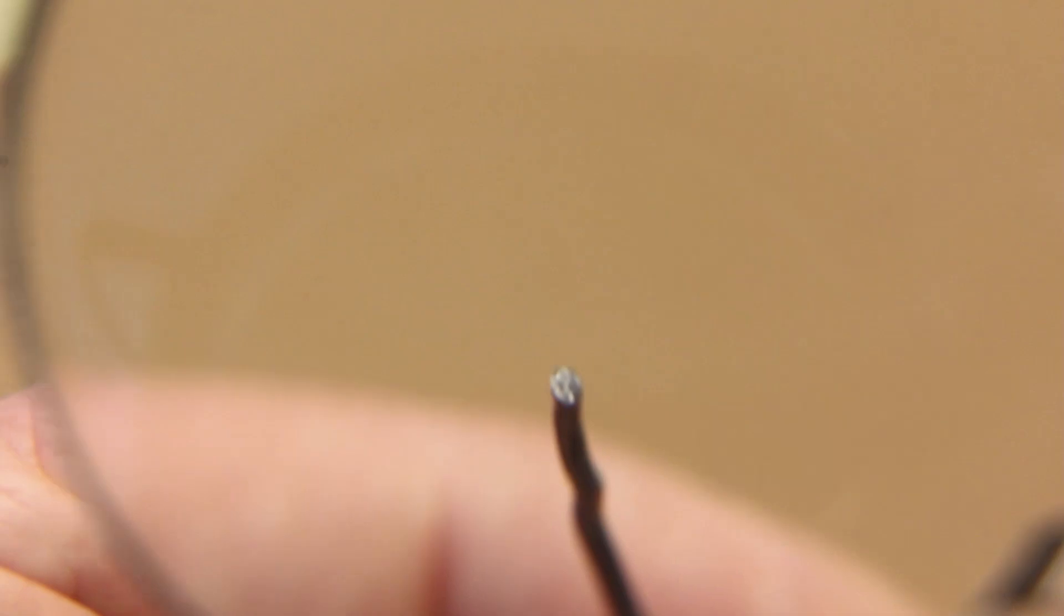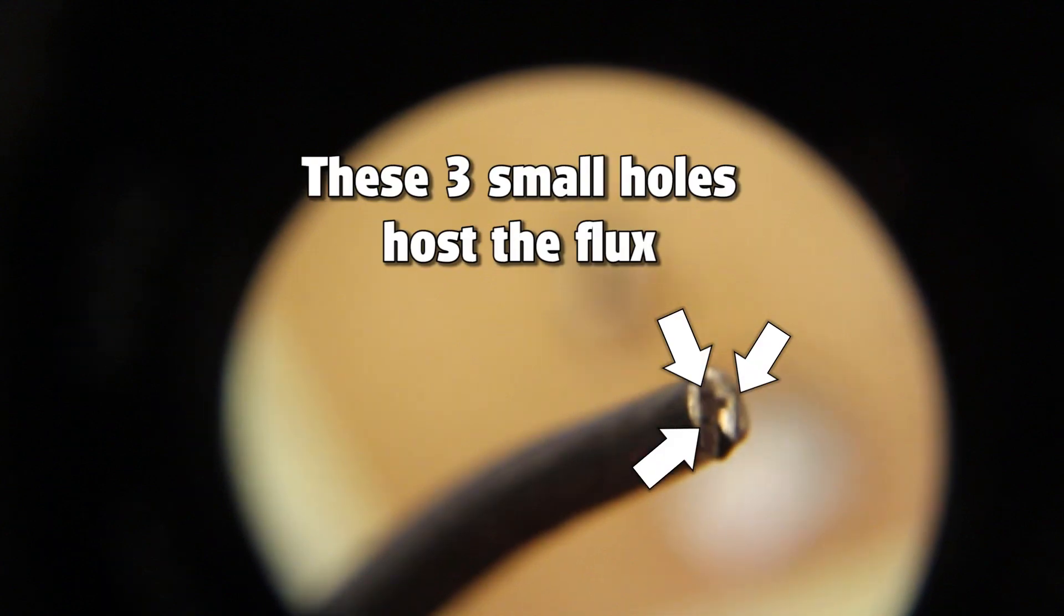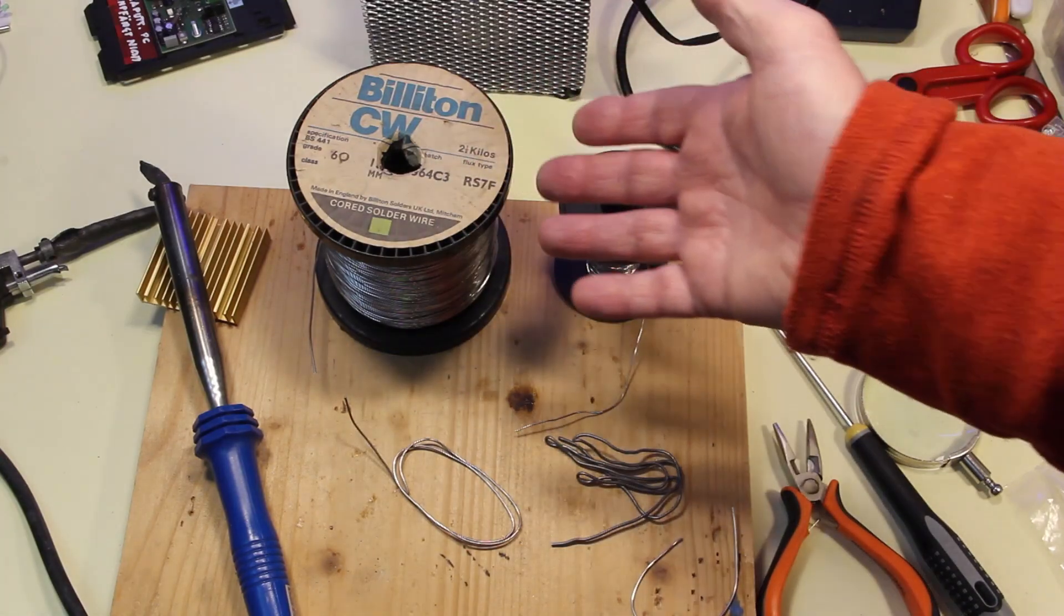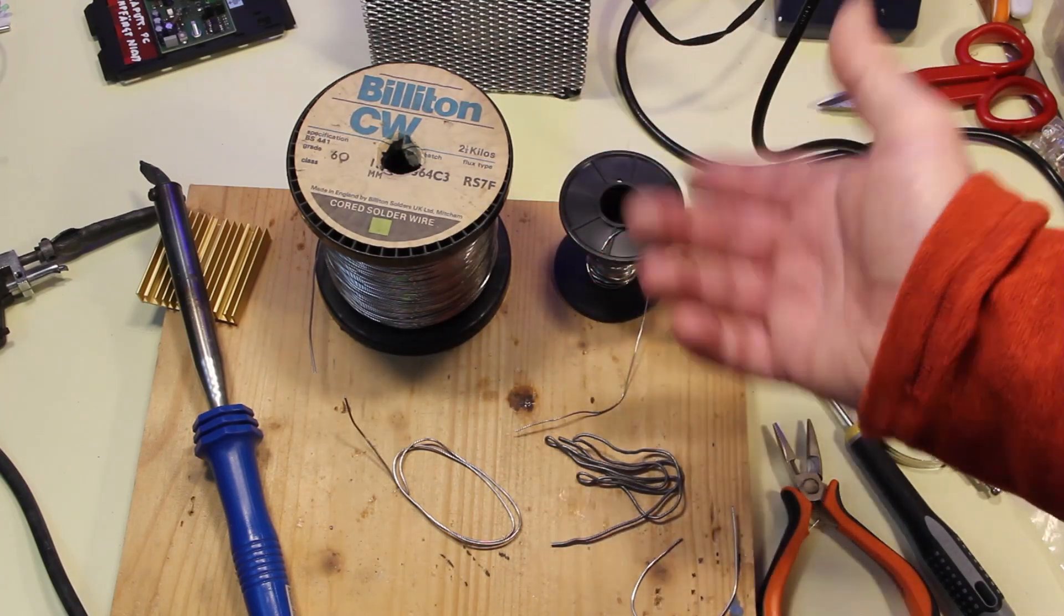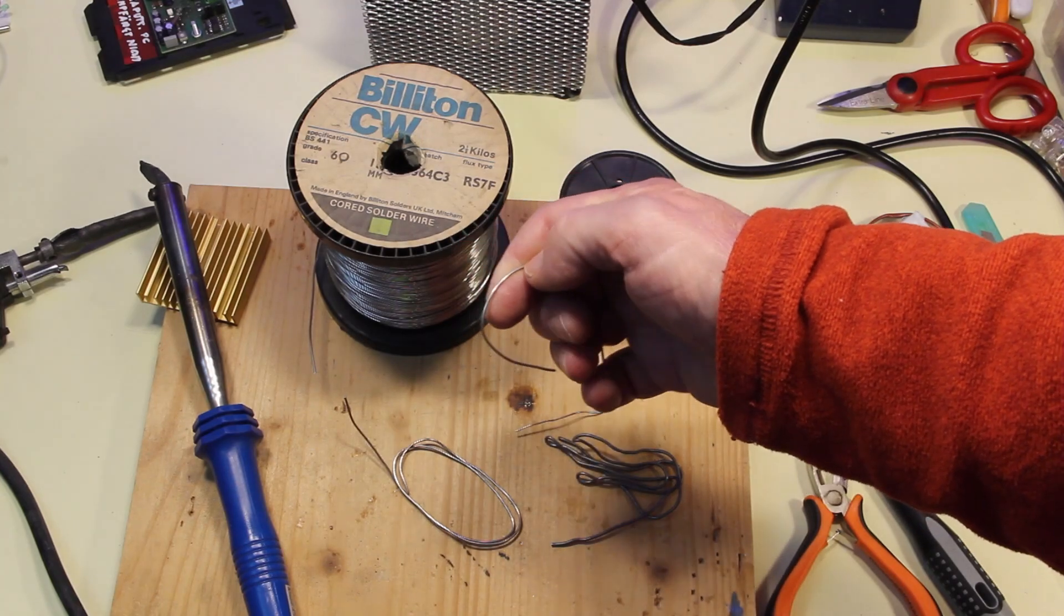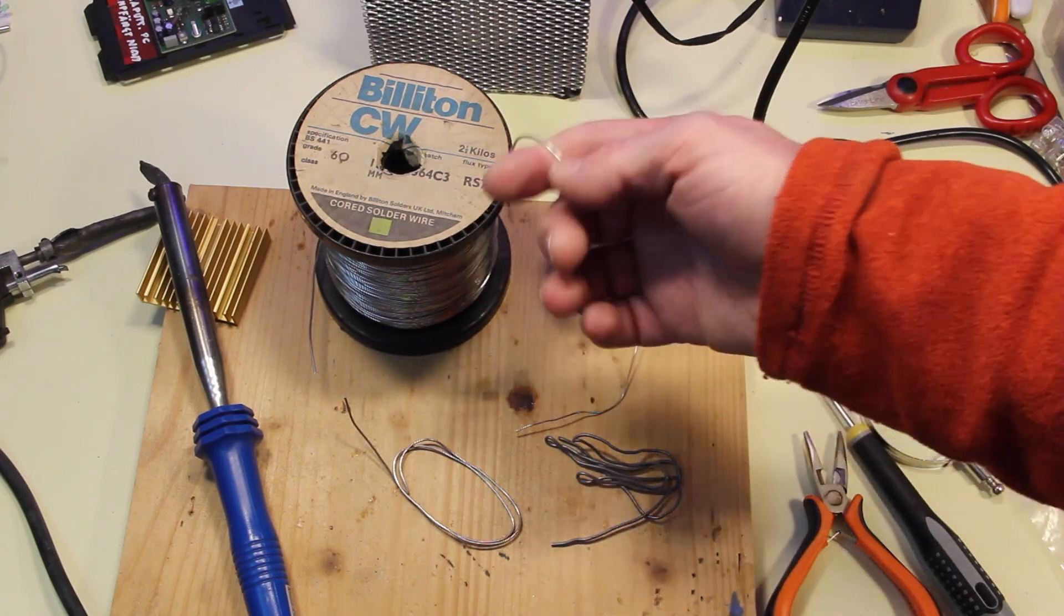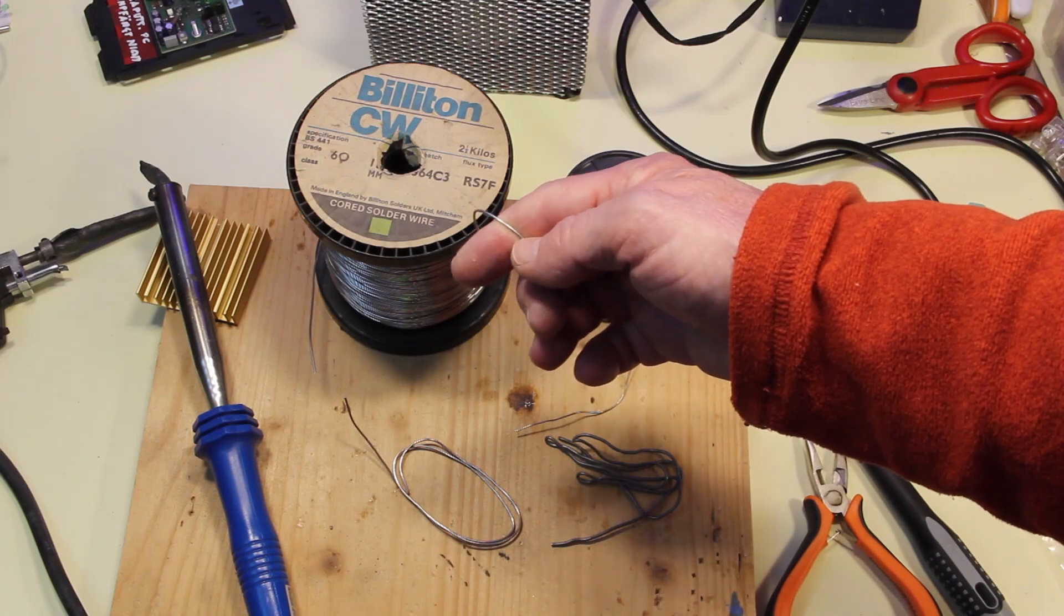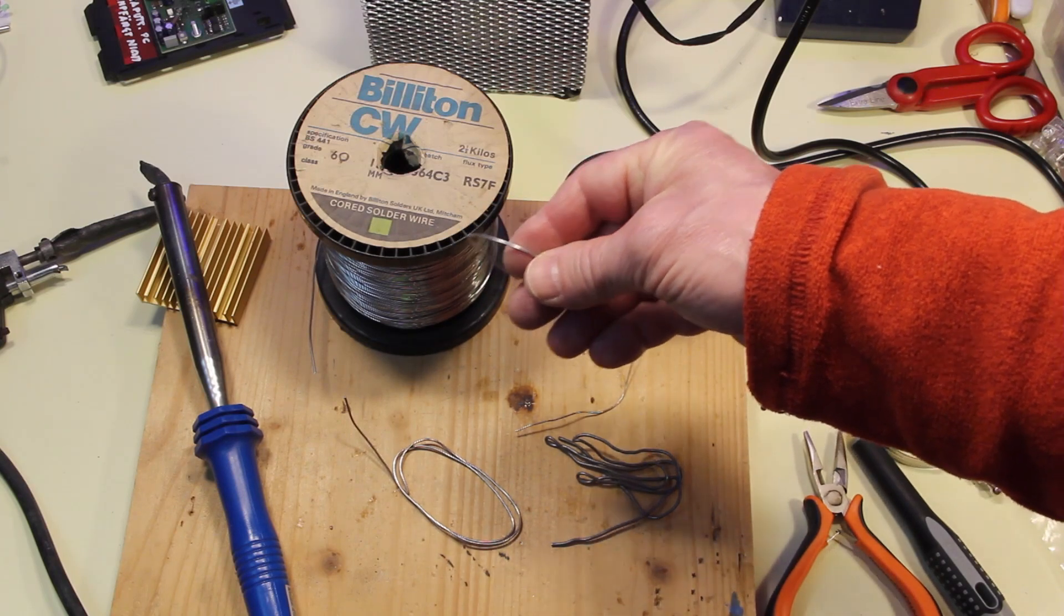In many cases the flux is already embedded inside the soldering wire, and this brings us to talk about the solder. The solder wire quality and type is very important. Nowadays it is often available lead-free solder wire that is made of pure tin and a little bit of silver, but it is really hard to work with.